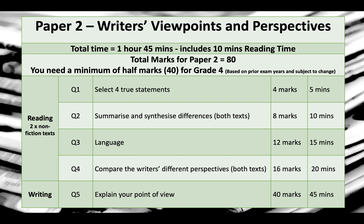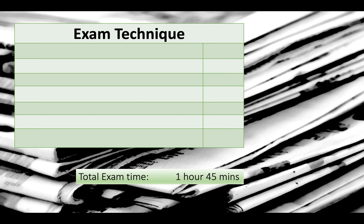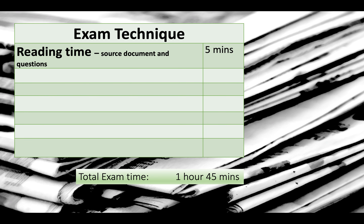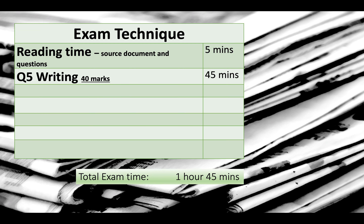Let's look at the order you should think about tackling these questions in, for the same reasons as paper one. You've got an hour and 45 minutes. Spend the first five minutes reading through everything — both texts in your source document and all of the questions. Then tackle the writing first, because that's the one you don't want to run out of time for. Spend 45 minutes on question five — it's going to be persuasive writing, so get your opinionated head on and put it across in a polite and friendly manner.